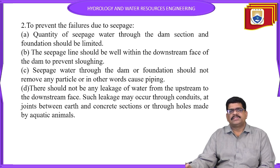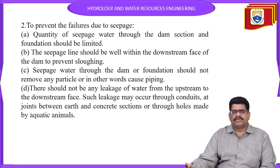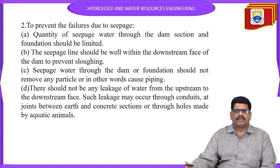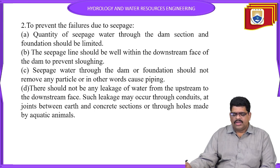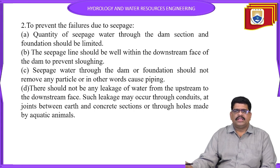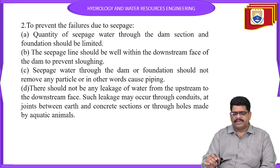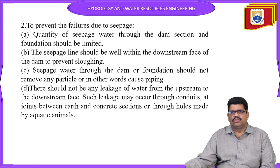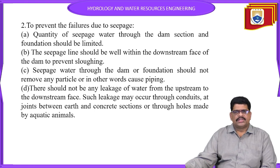The second design criterion is to prevent failures due to seepage. The quantity of seepage water should be limited. The seepage line should be kept within the downstream face to prevent slogging. Seepage water through the dam and foundation should not cause piping. Leakage from upstream to downstream should be controlled by providing impervious cores and drainage filters with adequate provision to observe any issues.